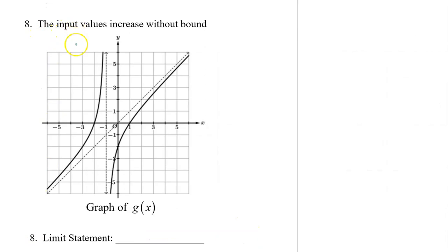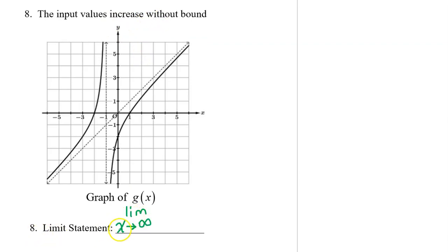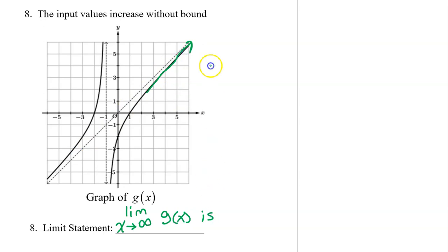Number 8 says the input values increase without bound, so we're talking about the right end behavior. That'll be the limit as x approaches positive infinity of g of x. As we go to the right, the output values increase without bound — they are approaching a slant asymptote, but that doesn't matter. It's going up and up as we go to the right, so the limit is positive infinity.